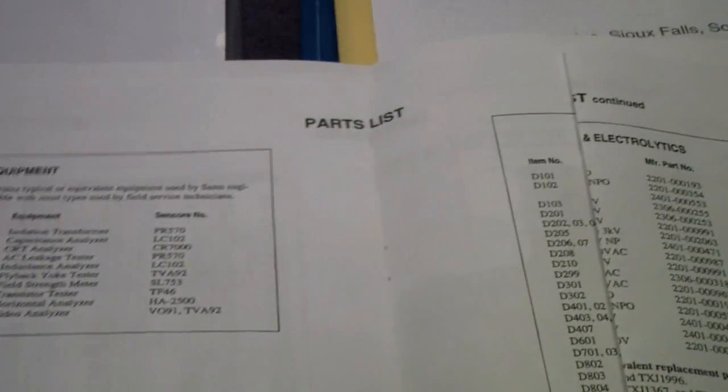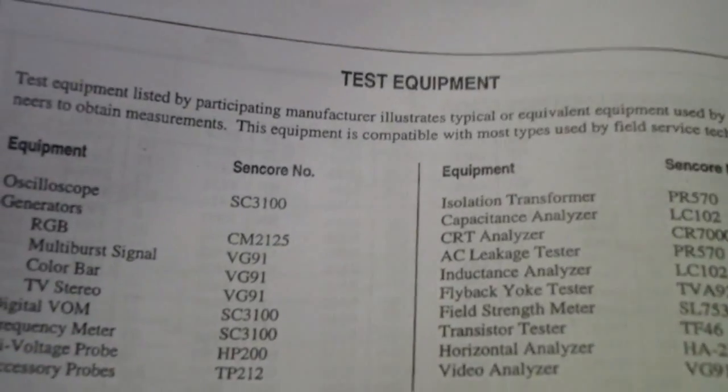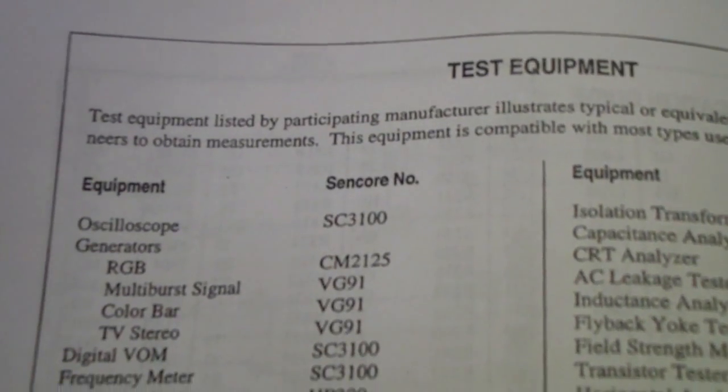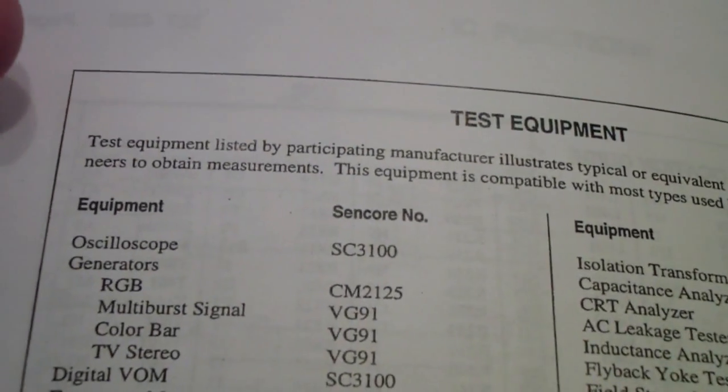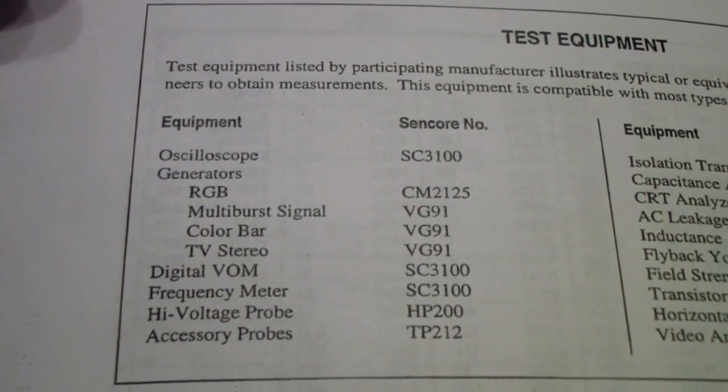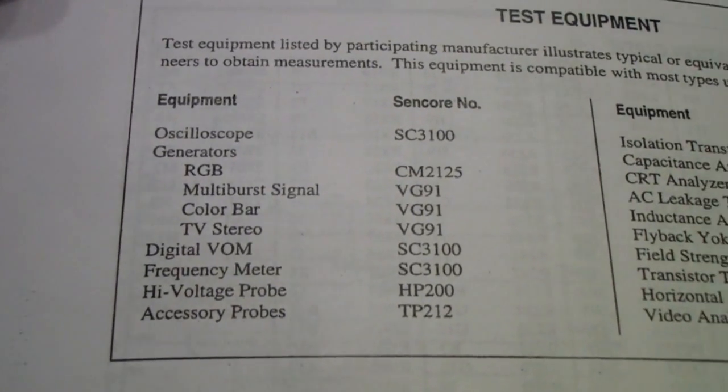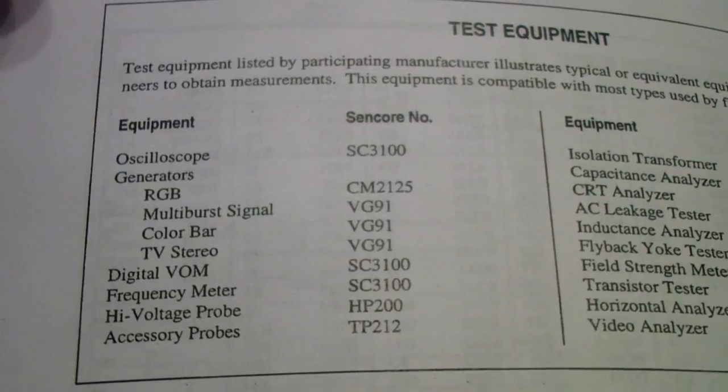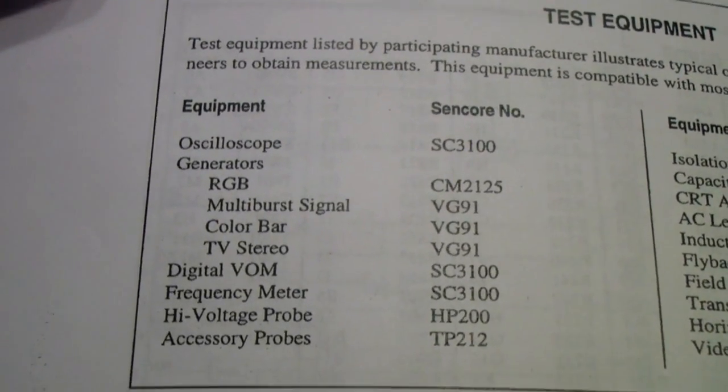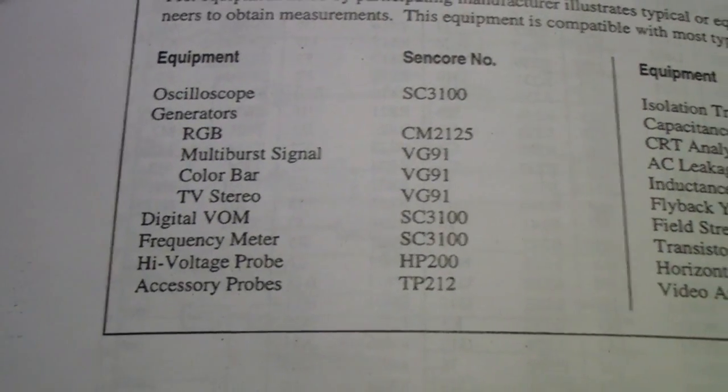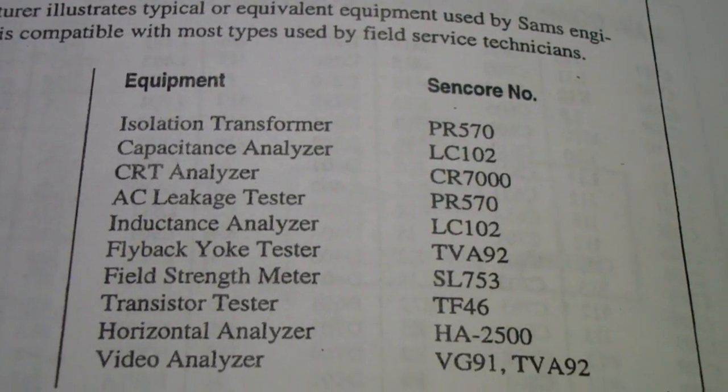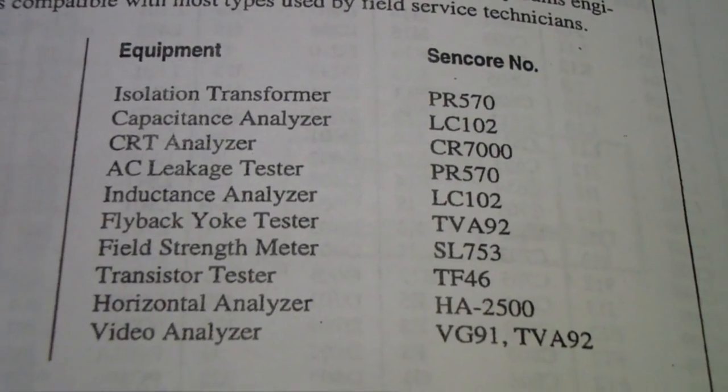I am a collector of this equipment and so I have tended to follow it and its progression. To me, it's rather interesting to see that eventually the scopes got to the point that it was all push button. There's a list of test equipment recommended. I eventually found the test equipment listings. You'll notice that the oscilloscope listed recommended is the Sencore 3100. That had sort of become the standard for at least the better service centers by the 90s. And then a series of other RGB generator, multi-burst signal generator. In that case, they're recommending a VG91, which I have a couple of those as well that I've refurbished. Digital voltmeter, frequency meter, high voltage probe, accessory probe.